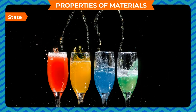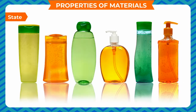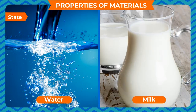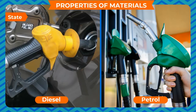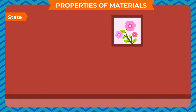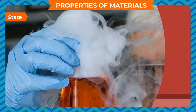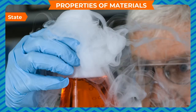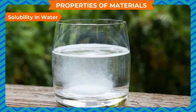Liquids have a lesser force of attraction between their molecules than solids, so they do not have a fixed shape — they occupy the shape of the vessel in which they are filled, while their volume remains the same. Examples of liquids are water, milk, cold drinks, vegetable oil, blood, petrol, and diesel. The molecules of gases are free to move and the force of attraction between them is very less — that is why when a deodorant is used, its smell spreads throughout the room. Gases do not have fixed shape or volume.